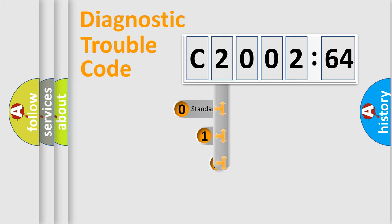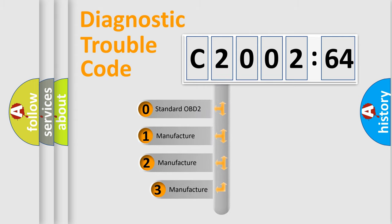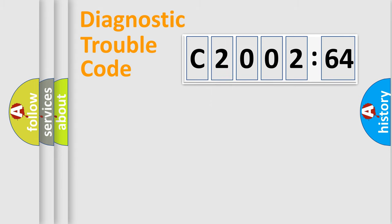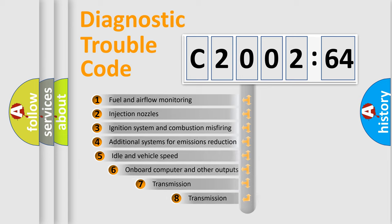This distribution is defined in the first character code. If the second character is expressed as zero, it is a standardized error. In the case of numbers 1, 2, or 3, it is a manufacturer-specific error expression.